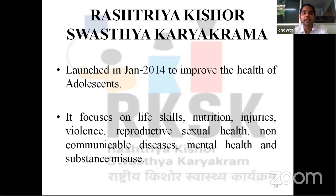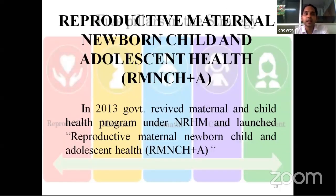Rashtriya Kishor Swasthya Karyakrama was launched in January 2014 to improve the health of adolescents. It focuses on life skills, nutrition, injuries, violence, reproductive and sexual health, non-communicable diseases, mental health and substance misuse. Reproductive Maternal Newborn Child and Adolescent Health: in 2013, the government revived the maternal and child health program under NRHM and launched RMNCH+A. The five strategic metrics for high-impact RMNCH+A interventions are reproductive health, maternal health, newborn health, child health, and adolescent health.